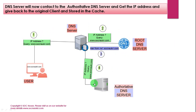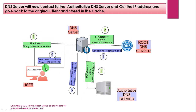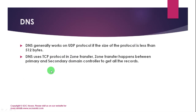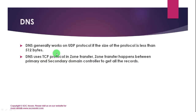The DNS server will then contact the authoritative DNS server and get the IP address, which is returned to the original client and stored in the cache. Attackers target DNS to get the list of all domain name servers and IP addresses of a company. DNS generally works on UDP protocol when the size of the message is less than 512 bytes.